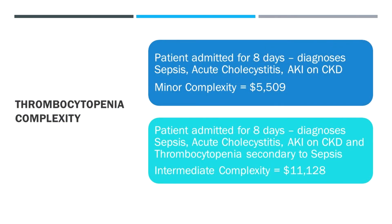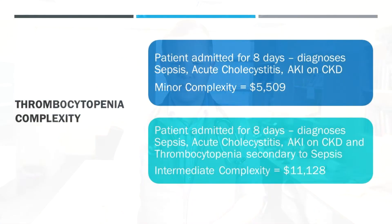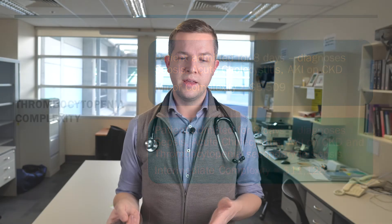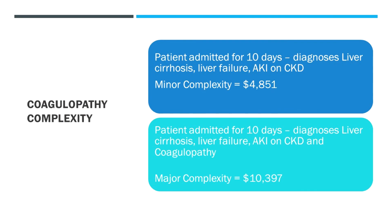Here's an example of thrombocytopenia: a patient admitted for eight days with sepsis due to acute cholecystitis and acute kidney injury on the background of chronic kidney disease — just that alone gives about five and a half thousand dollars in funding. Compare that to someone admitted for the same issues where the documentation specifies that the thrombocytopenia is secondary to sepsis — that takes the whole admission to intermediate complexity and effectively doubles the funding. For coagulopathy, someone admitted for ten days with liver cirrhosis, liver failure, and acute-on-chronic kidney disease gets minor complexity at four thousand eight hundred dollars. If you specify a coagulopathy related to liver disease — likely manifesting as a raised INR — that gives major complexity and more than doubles the income for that admission.